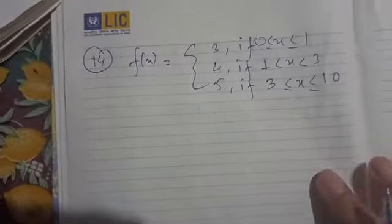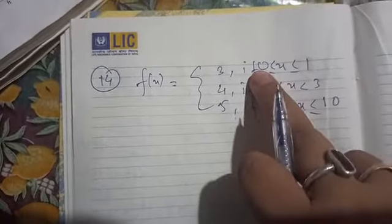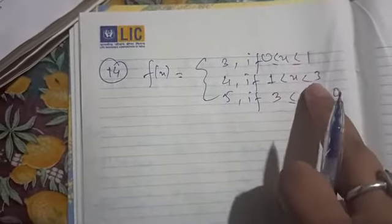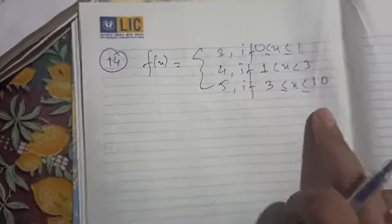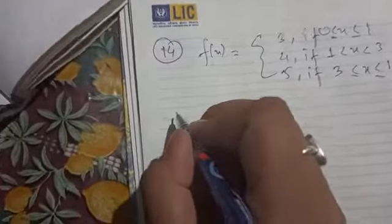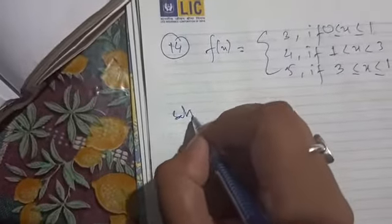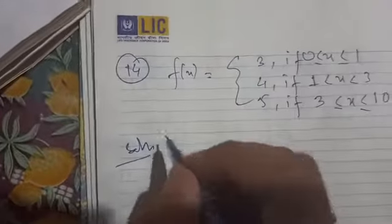For question number 14, you are asked to discuss the continuity. There are 4 points: 0, 1, 3, and 10. You have to check continuity at x = 0, x = 1, x = 3, and x = 10.